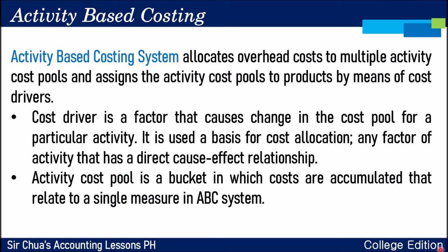A cost driver has a direct cause-and-effect relationship with cost. Because a cost driver occurs, the effect is that a cost gets allocated. When the activity level is higher, the cost allocated is also higher. Examples of cost drivers include number of machine setups and number of pounds used.